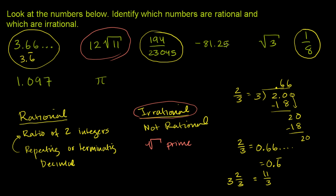Negative 81.25. Once again, very easy to represent this as a mixed number. It would be negative 81 and 25 over 100, which is the same thing as 1 fourth. And then very easy to represent this as an improper fraction.